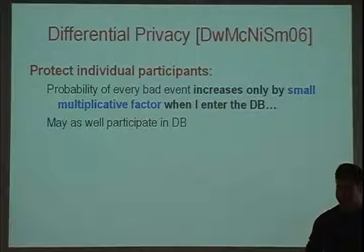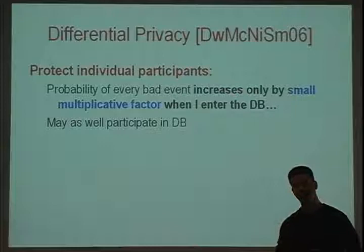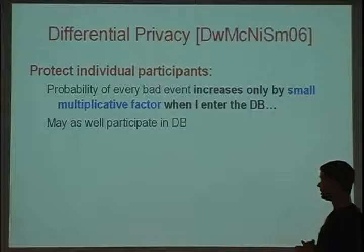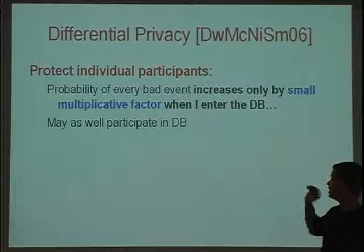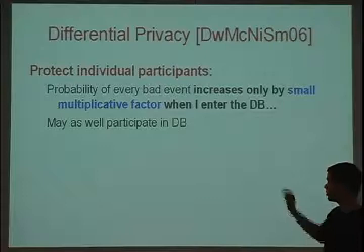Such a guarantee was suggested by Dwork, McSherry, Nissim, and Smith in 2006 — it's called Differential Privacy. Throughout the talk, the idea is to protect individual participants. The flavor of the guarantee is to say that the probability of any bad event that can happen to an individual user increases only by a small multiplicative factor when that user is inside the database, compared to when the user is not even present. The hope is that since bad things can't happen when the user is absent, they're unlikely to happen even when the user is in the database.